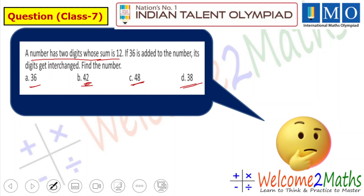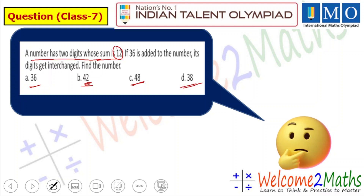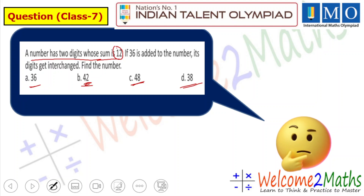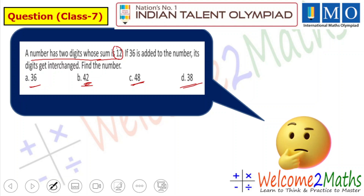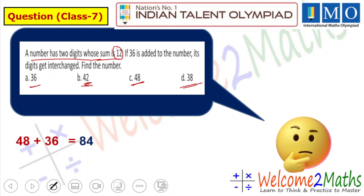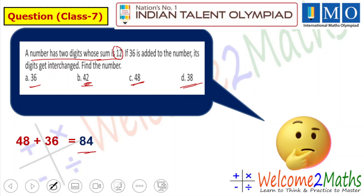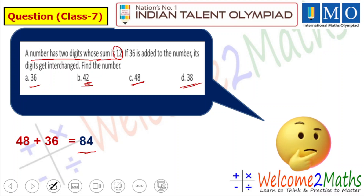If 36 is added to the number its digits get interchanged. Let us add 36 with 48: 48 plus 36 equals 84. When we interchange the digits of 48 we get 84. That means option C is the right one. This is how you can solve option-based questions.